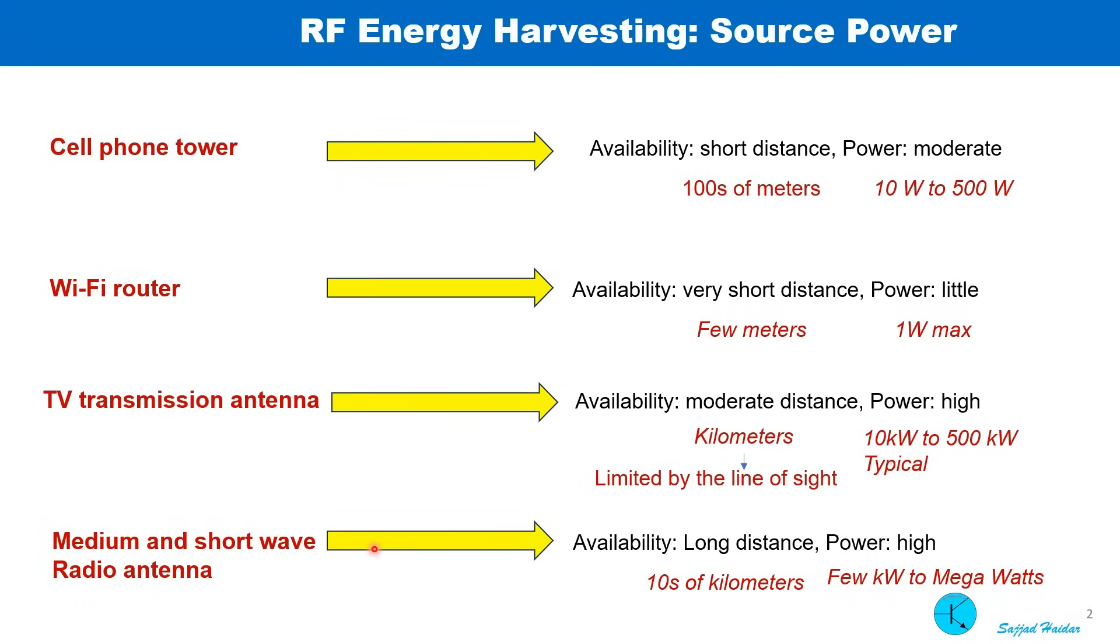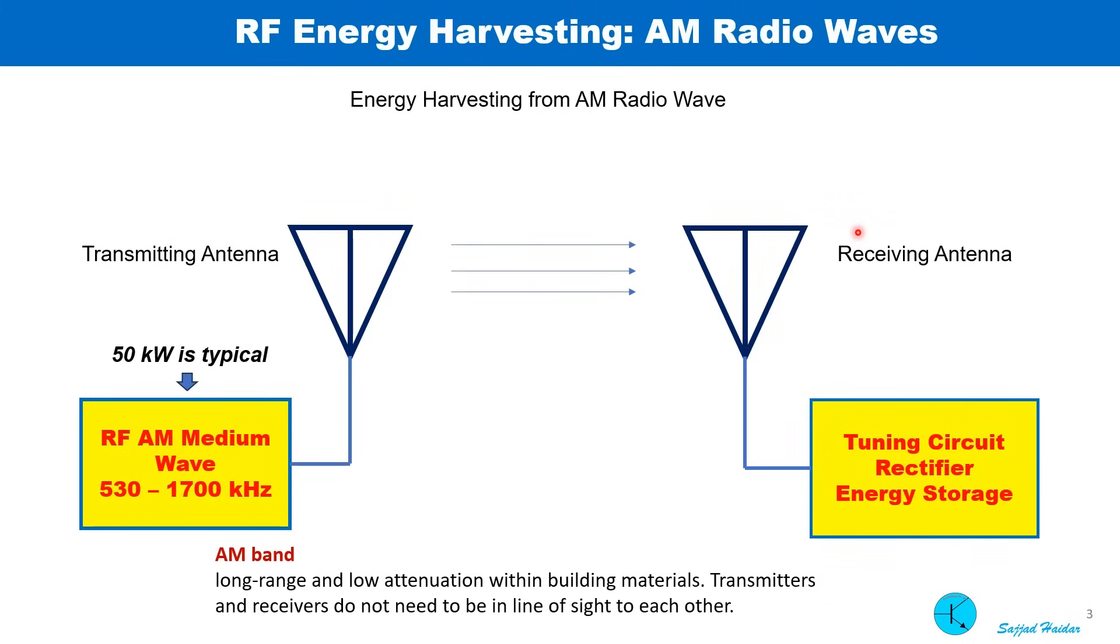And medium and short-wave radio antenna, it's a long range, tens of kilometers, and power is usually high, few kilowatts to megawatts. So it is clear that for long-range, medium wave signal is the most reliable one. The only limitation is the longer antenna. I will try to explain how easily one can harvest energy from medium waves.